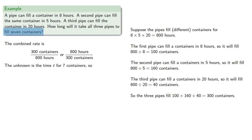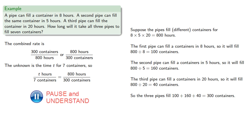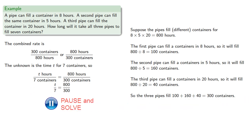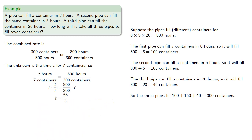The unknown time is for seven containers, and again it's easier if our numerator is the unknown — some number of hours per seven containers — so we use the form that has hours in the numerator and containers in the denominator. Our equation will be x hours per seven containers equals eight hundred hours per three hundred containers, and we can solve this to get approximately 18.67 hours.